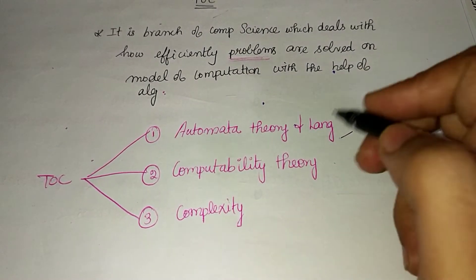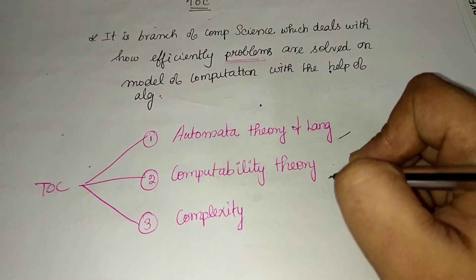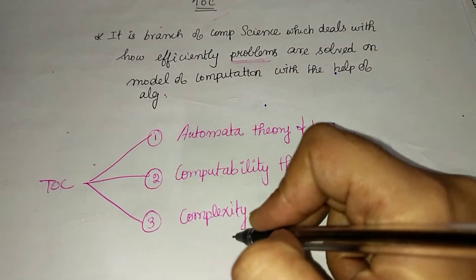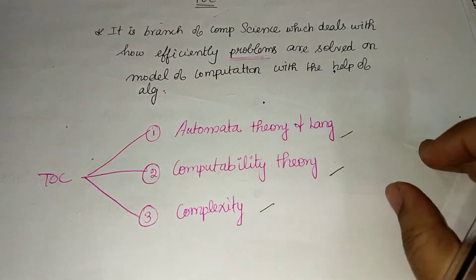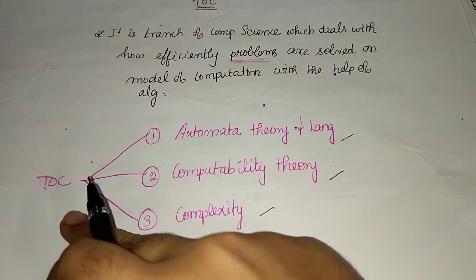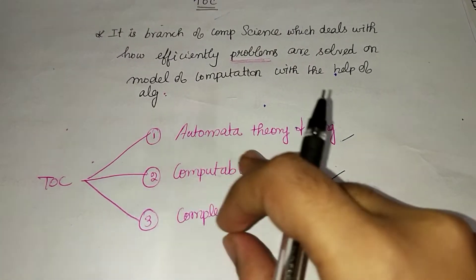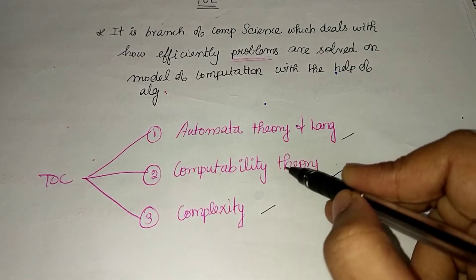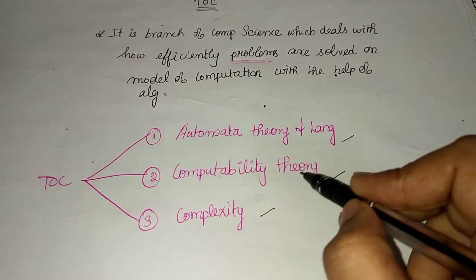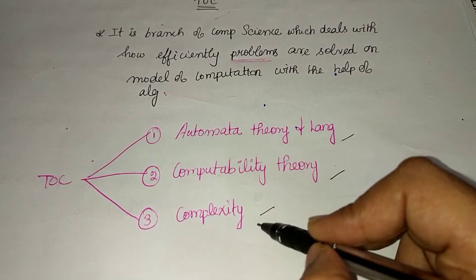The three branches of ToC are: first, Automata Theory and Language; second, Computability Theory; and third, Complexity Theory.